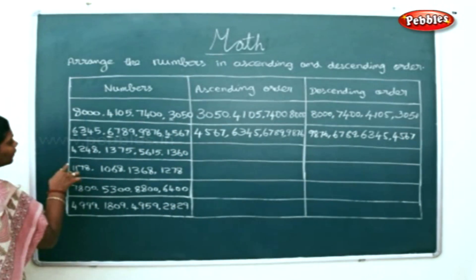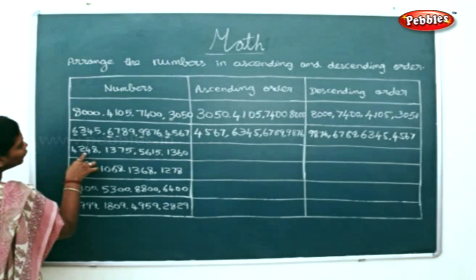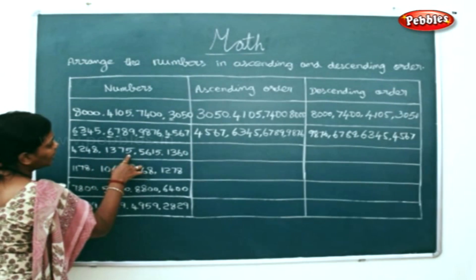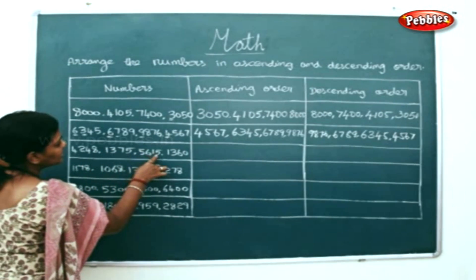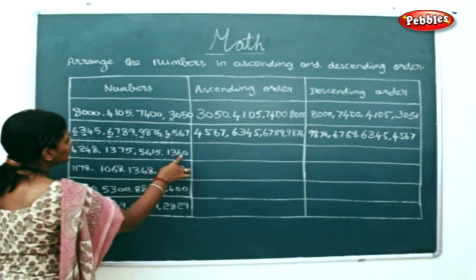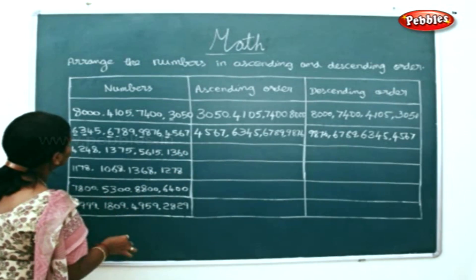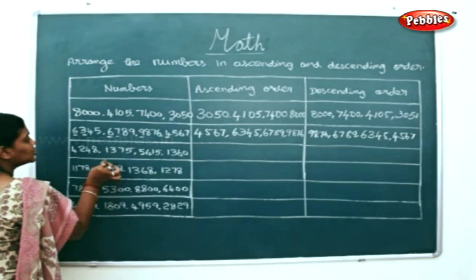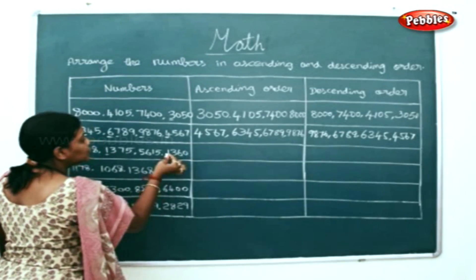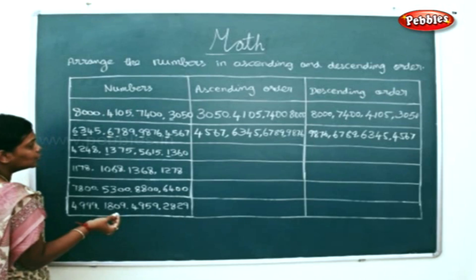Next, we have: 4, 2, 4, 8; 1, 3, 7, 5; 5, 6, 1, 5; 1, 3, 6, 0. We will check the thousands places. You have 2 ones here. If you have 2 ones, what would you do?